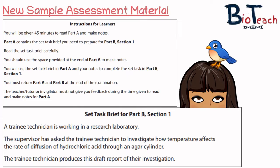The set task brief states that a trainee technician is working in a research laboratory. The supervisor has asked the trainee technician to investigate how temperature affects the rate of diffusion of hydrochloric acid through an agar cylinder. The trainee technician produces a draft report of their investigation. From this scenario you'll be able to decide whether you've got a biology, chemistry, or physics experiment. The technique is exactly the same regardless of which type comes up.